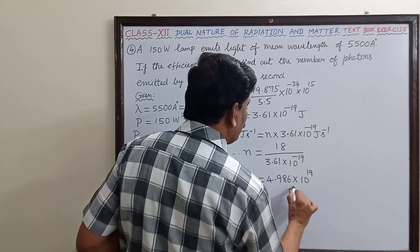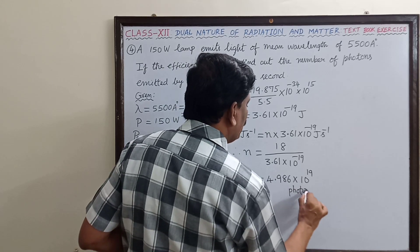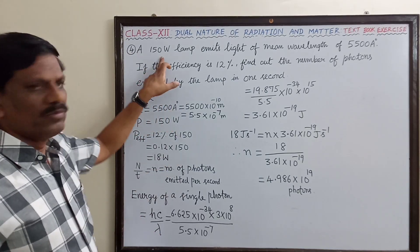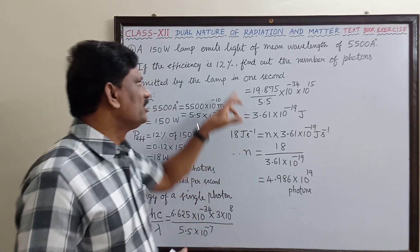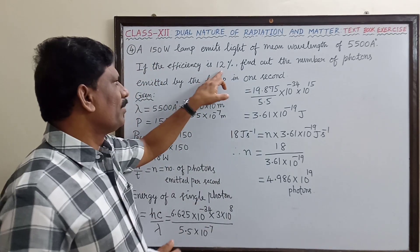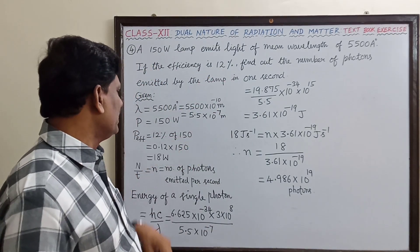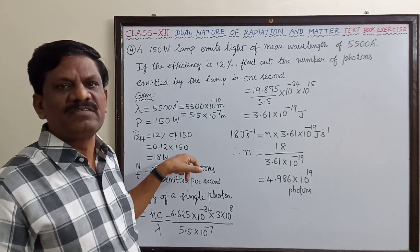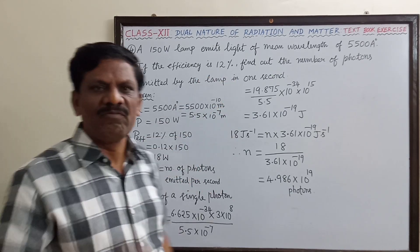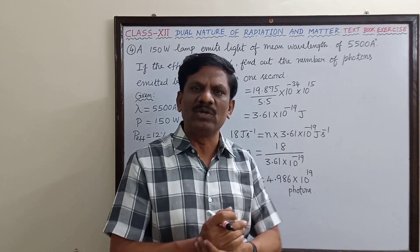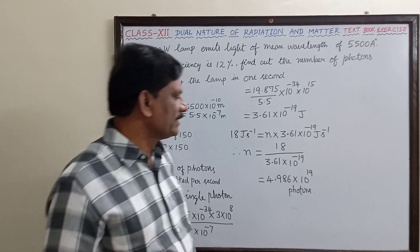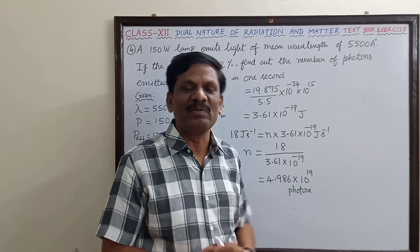To summarize: though the given power is 150 watt, only 12 percent efficiency means only 18 watt is utilized for photon emission. We then find the energy of one photon and divide the effective power by it to get the number of photons emitted per second. The final answer is n equal to 4.986 into 10 to the power 19 photons per second.